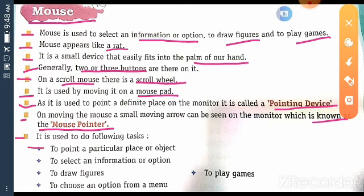First one, to point a particular place or object. Next, to select an information or option. Next, to draw figure. Next, to play games. Next, to choose an option from menu.